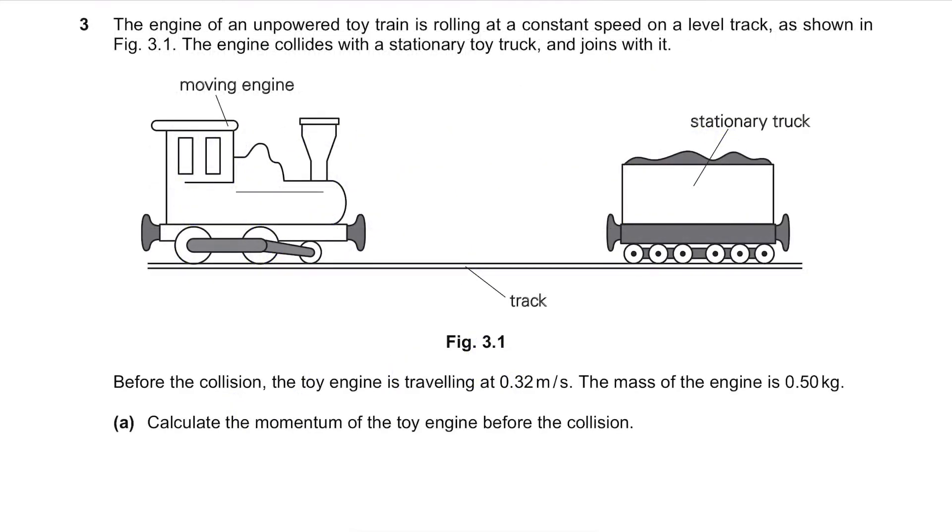Question 3. The engine of an unpowered toy train is rolling at a constant speed on a level track as shown in figure 3.1. The engine collides with a stationary toy truck and joins with it. So this train will move in this way and collide with this truck which is not moving. Before the collision, the toy engine is travelling at 0.32m per second. The mass of the engine is 0.50kg. Calculate the momentum of the toy engine before the collision.